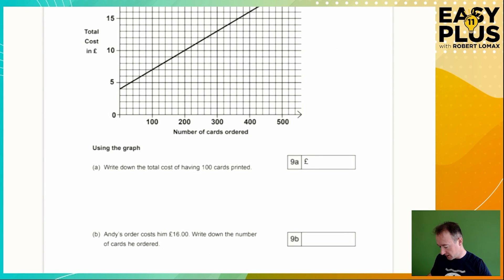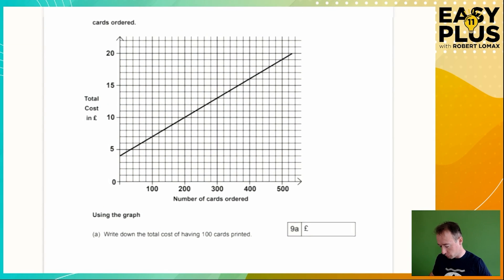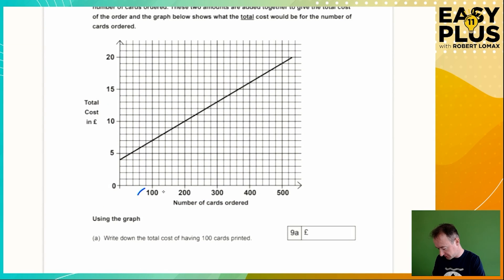The first question asks us to write down the total cost of having 100 cards printed. So that's a kind of warm-up question. We can see that 100 cards are here. So we work our way up to the line here and we go across to find that the total cost is £5, £6, £7. We should check that each line is indeed a whole pound. So yes, that works. Each line up the side here is worth a pound, so this takes us to £7.